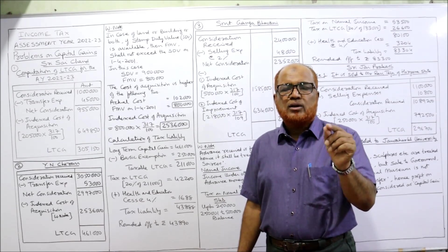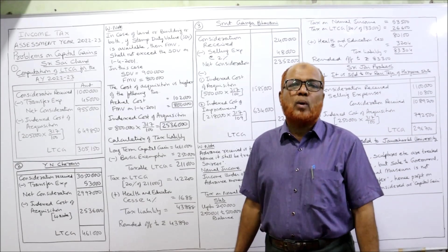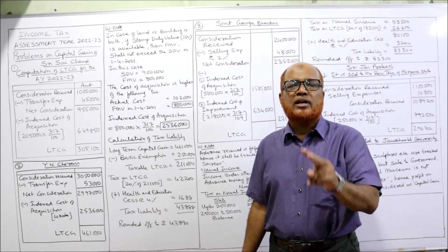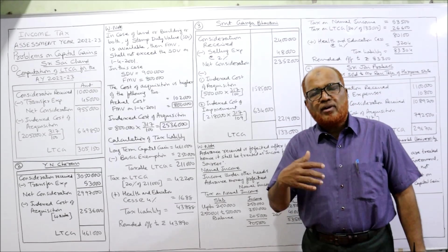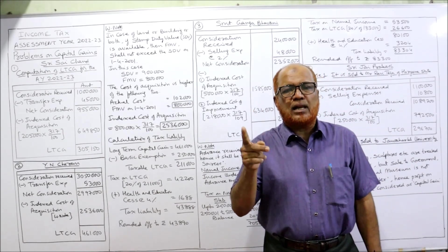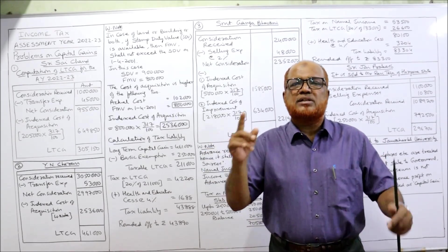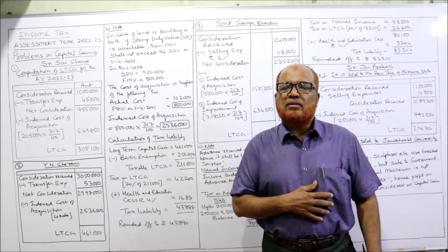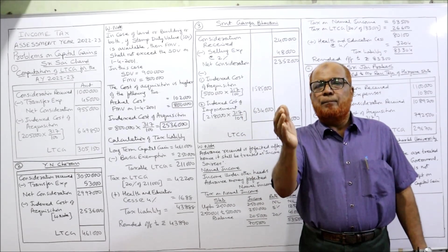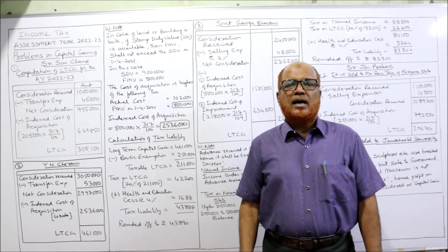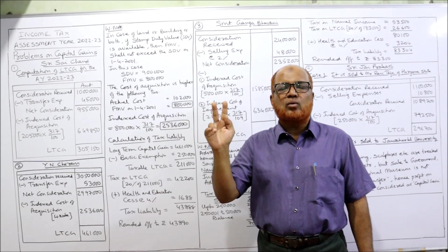First point: according to the provisions of the Income Tax Act, if an asset is purchased before 1st April 2001, the assessee can choose the higher of the following two — actual cost or fair market value on 1st April 2001. Whenever you watch the video, always keep a notebook and calculator beside you and immediately write down the provisions. Otherwise you'll forget it. I repeat this throughout the Income Tax Act subject — only then can you remember.